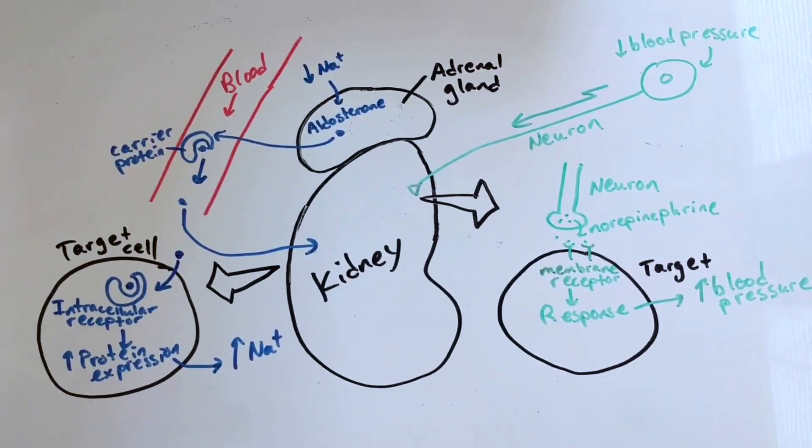Using chemicals like hormones and neurotransmitters, the endocrine and nervous systems are able to regulate all the organs in our body to maintain homeostasis.